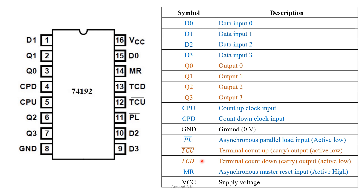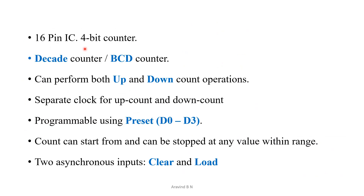The TCU and TCD pins are used when more than one 74192 IC is used in a cascaded manner; otherwise these two have no role to play. The 74192 is a 16-pin IC and a 4-bit counter. However, it doesn't count from 0000 up to 1111 — it is only a decade counter, meaning it counts from 0000 to 1001, that is from 0 to 9.